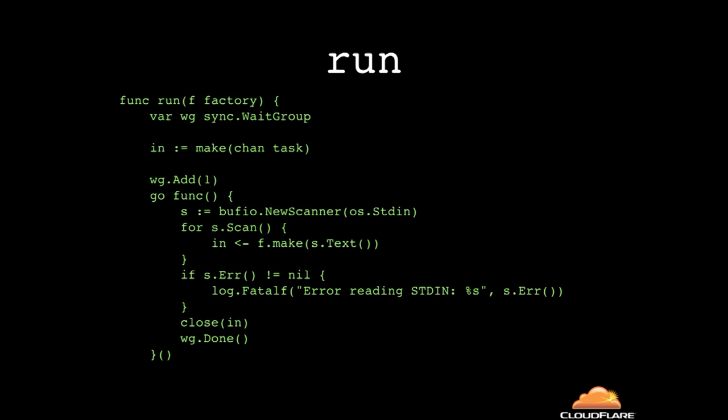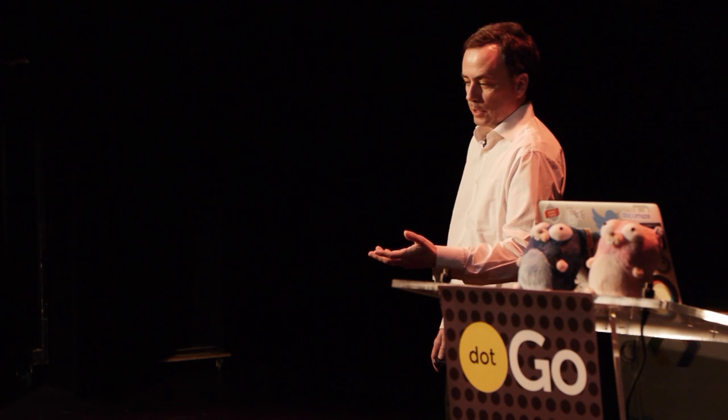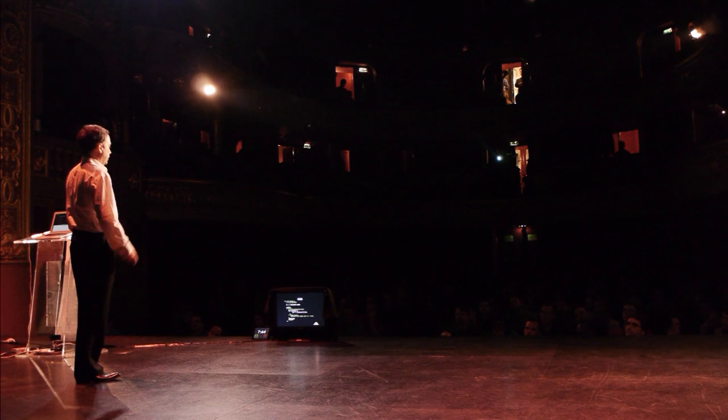Now I create a generalized function called 'run' that takes one of these Factories — something capable of making tasks. Instead of a channel of the concrete lookup struct, I now have a channel of Tasks. This is one of those interesting interface moments: I'm passing down a channel of anything satisfying that interface. The same code works for all three programs I was asked to write. It scans stdin, calls the factory's 'make' on each scanned line to create a new task, and sticks it down the channel.